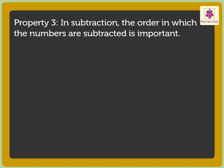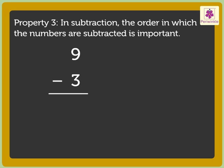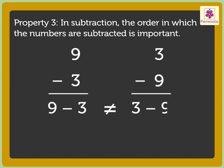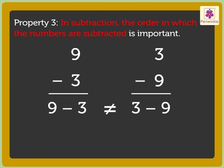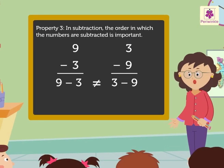Property 3: in subtraction, the order in which the numbers are subtracted is important. Let us take the numbers 3 and 9. When we subtract 9 minus 3 and 3 minus 9, we do not get the same answer. That is, 9 minus 3 is not equal to 3 minus 9. Thus, it tells us that in subtraction, the order in which the numbers are subtracted is important. Hope you enjoyed revising the subtraction concept and properties.